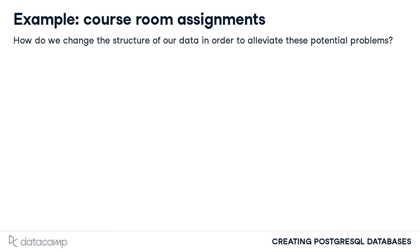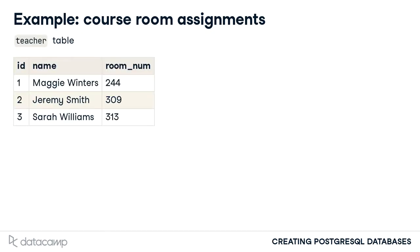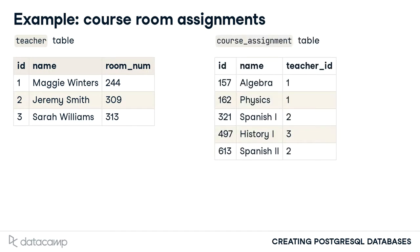So how do we change the structure of our data in order to alleviate these potential problems? One change that would be helpful is to create a table that stores teacher-specific data. One potential implementation of the teacher table is shown here. We have assigned each teacher a unique identifier using the primary key of the table and can associate the room number with the teacher in a single location. This allows us to simplify the structure of our course table. The table name is changed to course_assignment to better reflect the data in the table. We remove the teacher and room_number columns and add a teacher_ID foreign key column. We still have access to the same information as before — the course is associated with the teacher name and room number through the teacher_ID foreign key, which can be accessed through the use of a join statement.